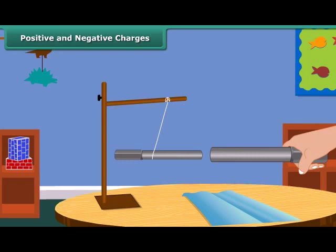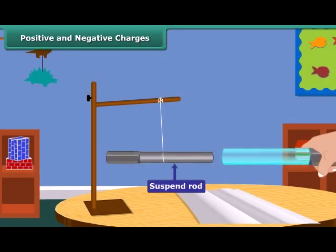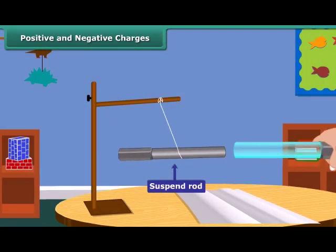The suspended rod moves away from the second one. Now take a glass rod and rub it with a silk cloth. Bring this glass rod close to the charged suspended ebonite rod.